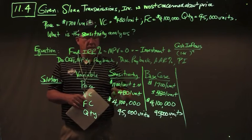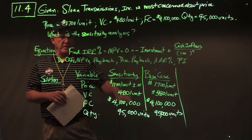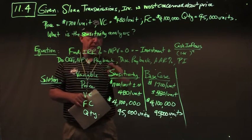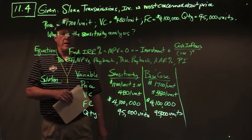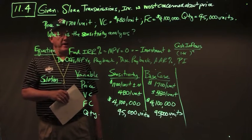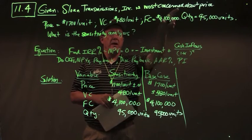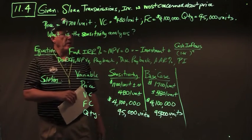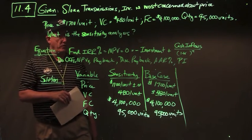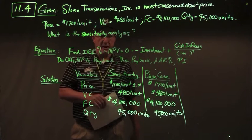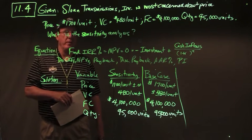We vary price plus or minus one penny, two pennies, three pennies, and compute income statements, then OCFs, NPVs, payback period, discounted payback period, AAR, profitability index — all the tools from chapter nine — and finally the internal rate of return using those cash flows: minus the investment required plus OCFs discounted at the point where NPV equals zero. That's sensitivity analysis for problem 11.4.